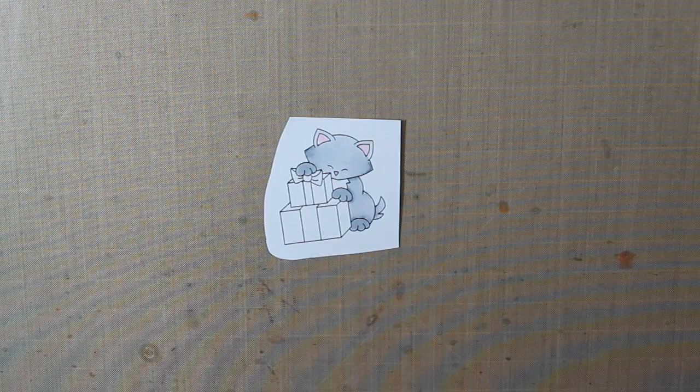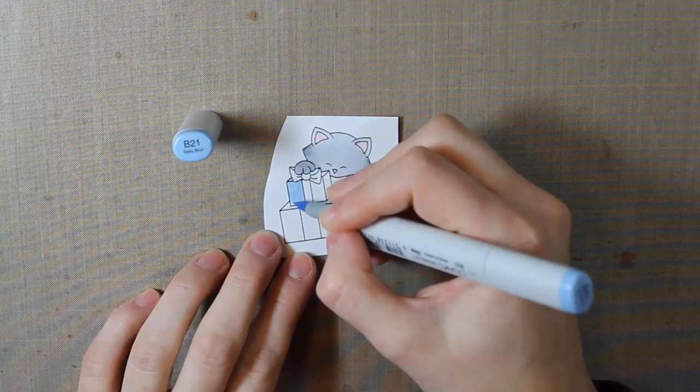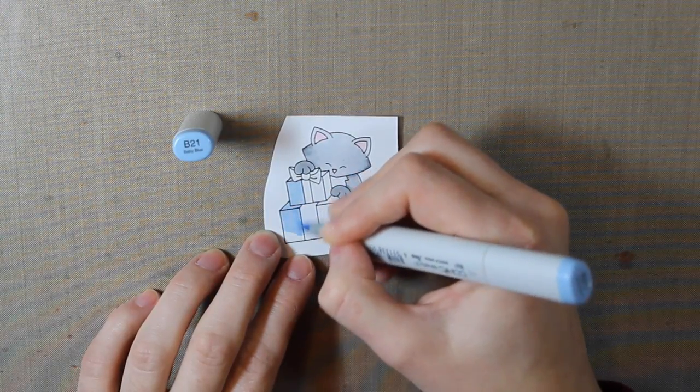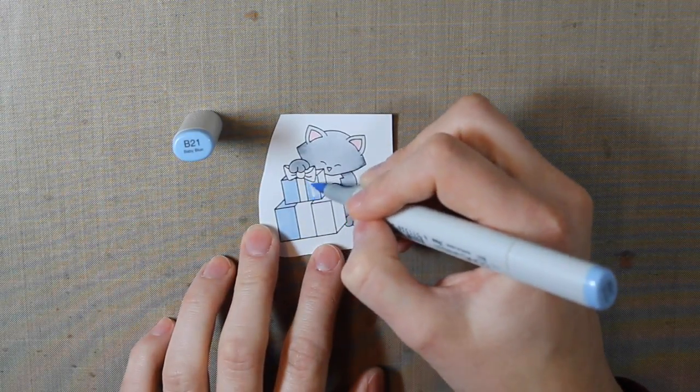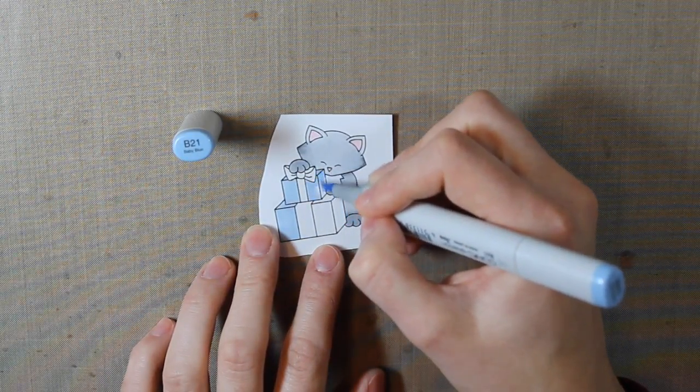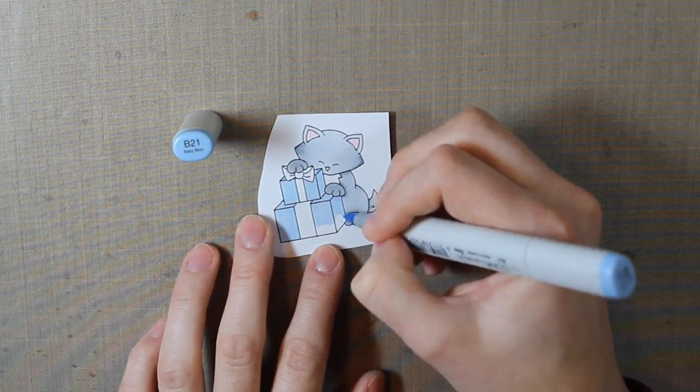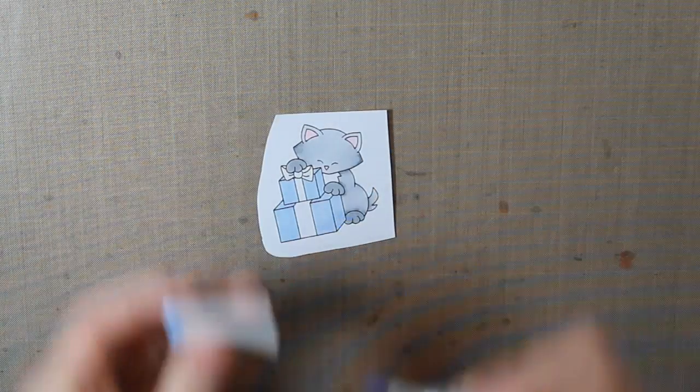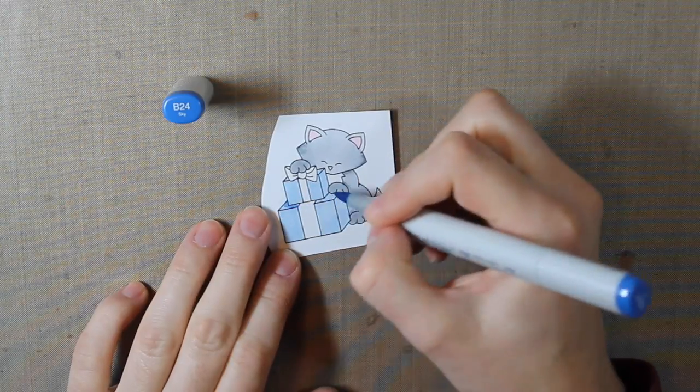So for the cat's present, I want it to match the background. So I'm using the B21, which is a light blue color. And I'm coloring in the entire box part of both of those presents. And then I'll add in a little bit of shading. I'm going to be using the B24.